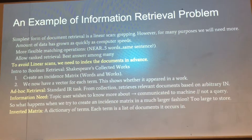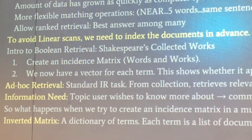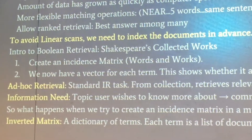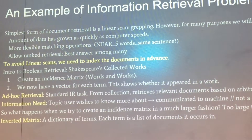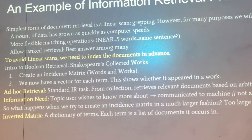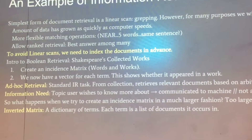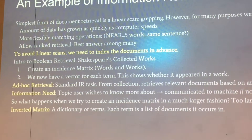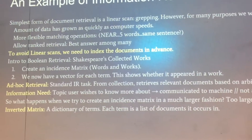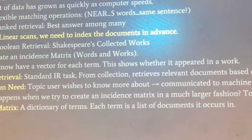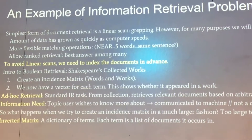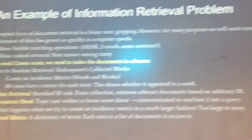An example of an information retrieval problem: you're all probably familiar with some Unix code. One way of actually retrieving information from documents or databases would be the grep command. That's suitable for small documents, but for large-scale information we need something more, because the data we have is growing as quickly as computer speeds themselves. So we need more flexible matching operations, ranked retrieval — the best among all the results we get — and to avoid linear scans, we need to index the documents.